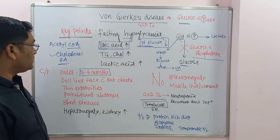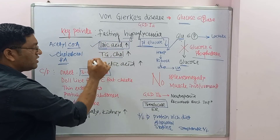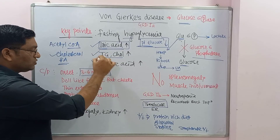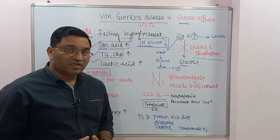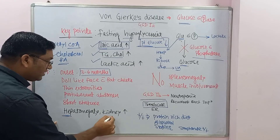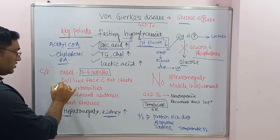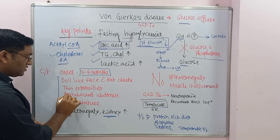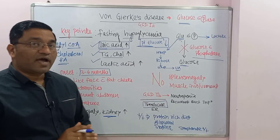To summarize the key points: fasting hypoglycemia, hyperuricemia, hyperlipidemia, and lactic acidosis. The important clinical features are hepatomegaly and renal involvement, with the typical appearance of a doll-like face, short stature, thin extremities, and protuberant abdomen.